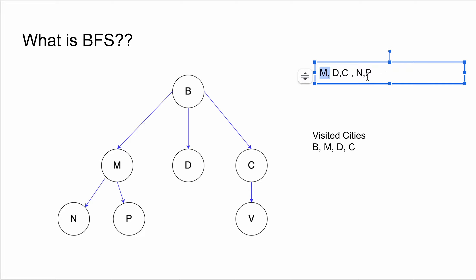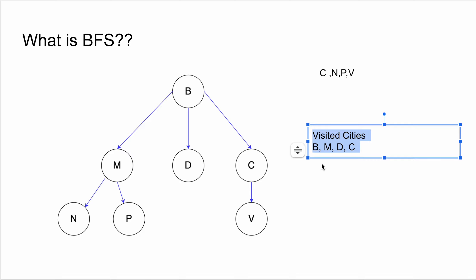Initially we have B in the queue. We remove B and write M, D, N, C. Then removing M, we write the next two cities reachable in one shot: N and P. After N and P, we remove D — but from D you cannot travel anywhere. Then from C you can travel to V. Apart from this, you also track which cities you have already visited. Why? Because if there is a flight from Chennai to Delhi, you don't want to use two steps to reach Delhi when you can do it in one. That is why you maintain a visited set.